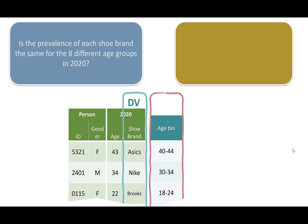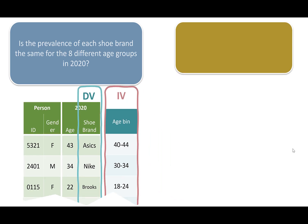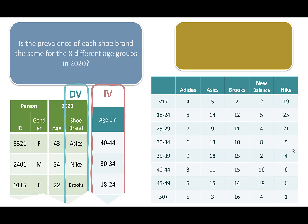We're treating age bin as just a category in this case. Really, the distinction between an independent variable and a dependent variable starts to wash away when you're dealing with chi-square or other frequency-based tests like test of proportions. We're really just looking at: is there a relationship between two variables? But I'll continue to use the phrase dependent variable and independent variable — that has more to do with the way the question is asked than the statistical test itself. So we're going to summarize the data for each of these age bins, and in this case it would look something like this.